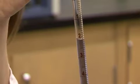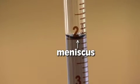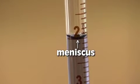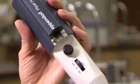As you draw up the desired liquid, try to take your reading with the pipette in a vertical position so the meniscus will lie flat.